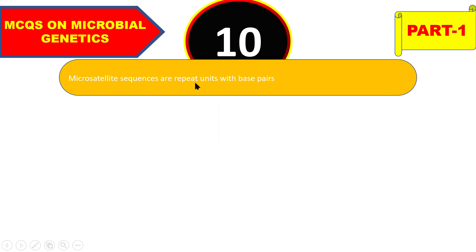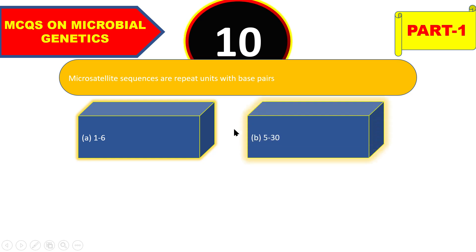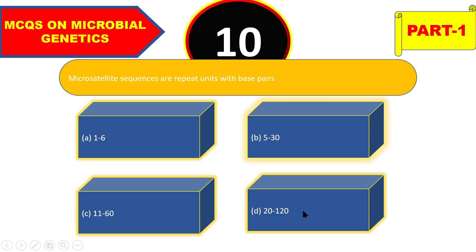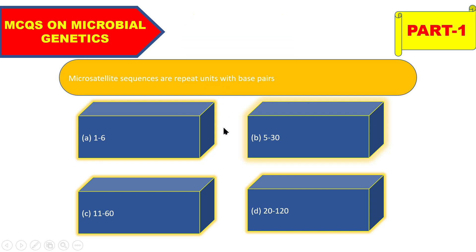Next question: microsatellite sequences are repeat units with base pairs 1 to 6, 5 to 30, 10 to 60, or 20 to 120? The right answer is 1 to 6 base pairs for microsatellite sequences.